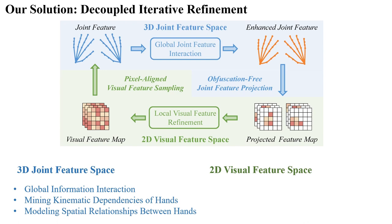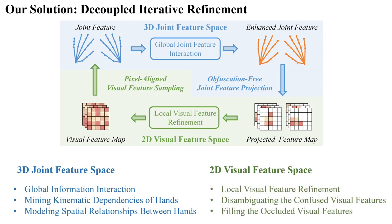On one hand, we hope to mine the kinematic dependencies of hand joints within a single hand, and on the other hand, we hope to model the spatial relationship between the two hands. In the 2D visual feature space, we mainly perform local visual feature refinement to alleviate the ambiguity caused by similar hand appearances.